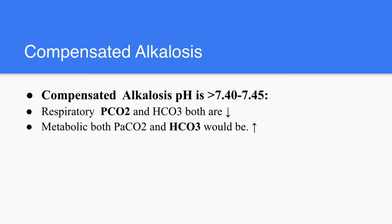In case of compensated alkalosis, the pH would exceed 7.4 but still not exceed 7.45. If it's respiratory, the PaCO2 would be low, and the bicarb also follows to be low, because it's trying to cause acidemia — the bicarb is trying to be washed out so there would be acidemia to compensate for the alkalosis. In case of metabolic alkalosis, the bicarb would be high, and then the PaCO2 would also be high to create respiratory acidosis to compensate. So in fully compensated cases, you are going to find both parameters are either high or both low.